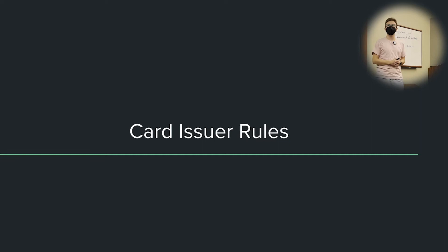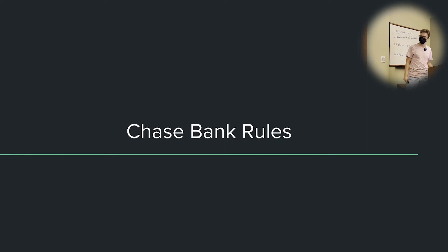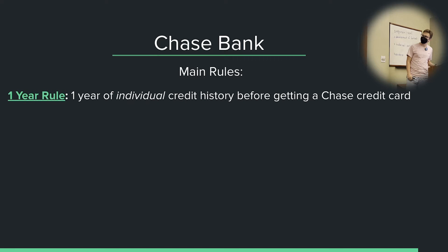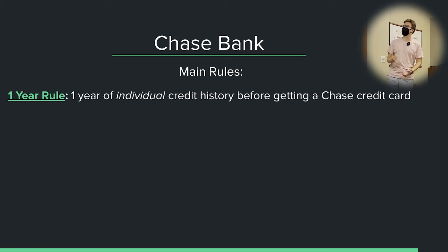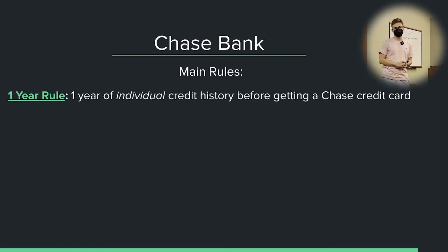Now we're going to talk about the card issuer rules — the basics of application rules for various card issuers. We're only going to talk about the two main ones. First, Chase. Chase's main rule you want to know about first is the one-year rule. This is not something written down in Chase's guidelines, but it's what's been seen online from application data points. You're going to need one year of individual history before you're going to get approved for a Chase card — not authorized user history, individual history. Your oldest account needs to be at least one year old.